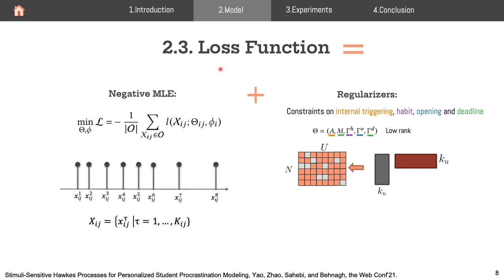Our loss function consists of two components. First, we have the negative log-likelihood of observing the histories of available student-assignment pairs, computed based on the intensity function introduced earlier. Second, we have a regularization loss from constraints on the parameterization of internal and external triggerings — student habit, assignment opening, and deadline. For parameters in matrix format, we assume they have low-rank structure, and using a collaborative filtering-based method, we can infer parameters on missing student-assignment pairs from those that do have historical activities. For more details including the explicit loss function and optimization, please check our paper.